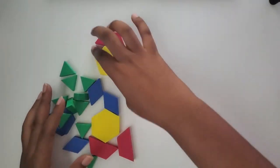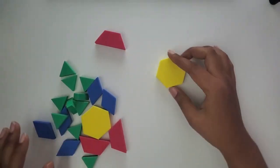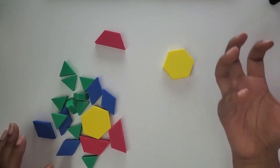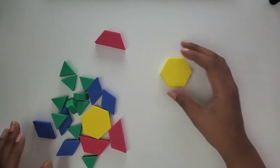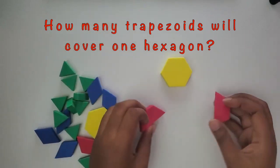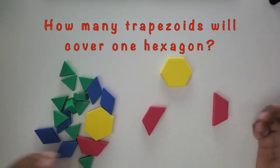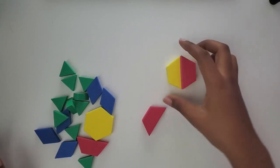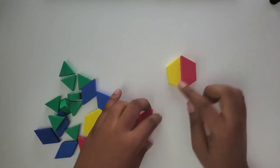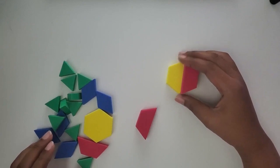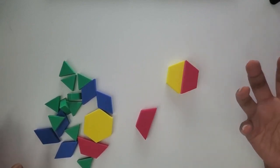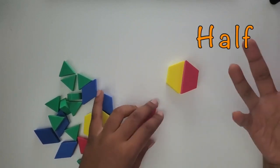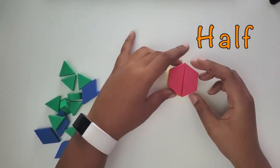We're going to look at if I had this hexagon and it represented one whole, like one, how many of these trapezoids would I need to cover this hexagon? So I can take one and I still see, so now I know about half of the hexagon is filled. So one trapezoid is half of a hexagon.